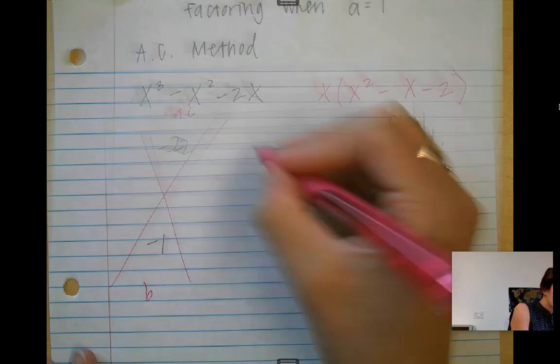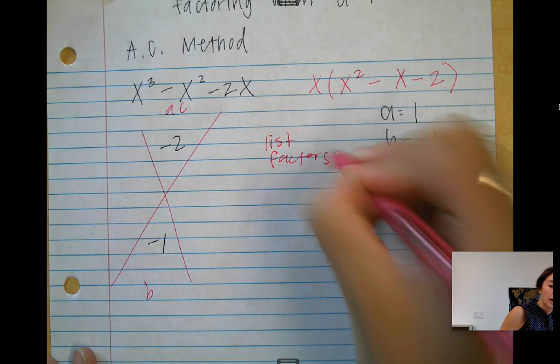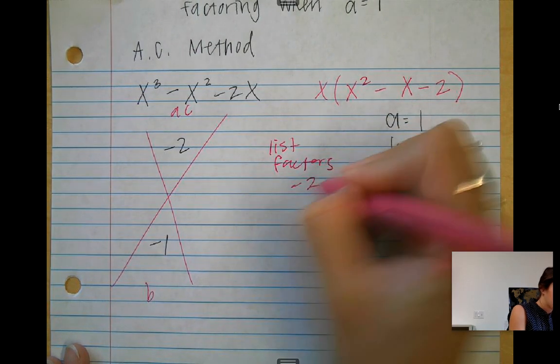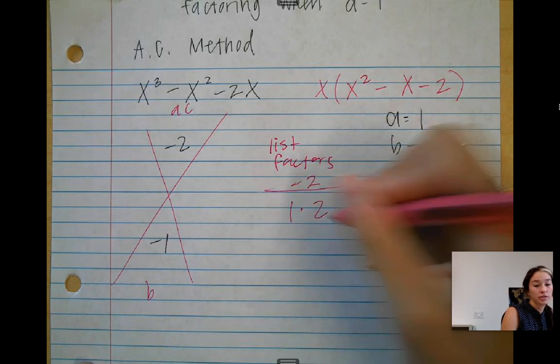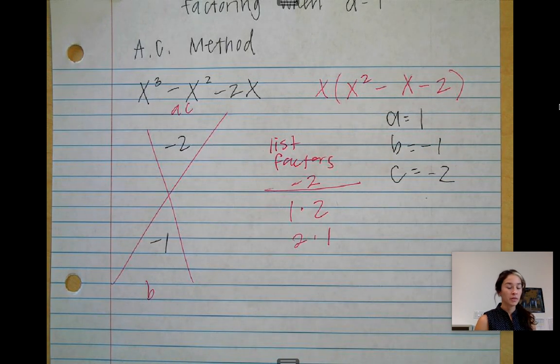Now we want to list the factors. So list factors of A times C, which is negative 2. My only factors of 2 are 1 and 2, or you could say 2 and 1.